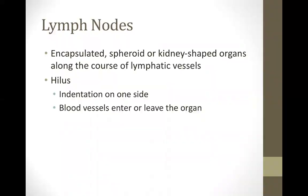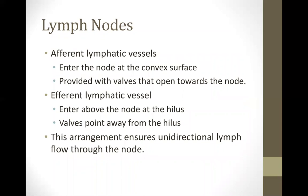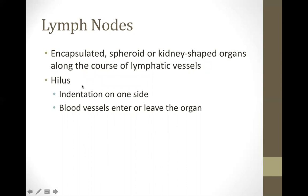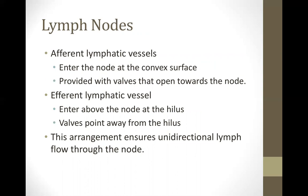The next lymphatic organ is lymph nodes — in Tagalog, kulani. They are described as encapsulated, spheroid or kidney-shaped organs along the course of lymphatic vessels. The lymph node has an indentation on one side called the hilus, where blood vessels enter or leave. There are afferent and efferent lymphatic vessels: afferent vessels enter at the convex surface with valves that open toward the node, while efferent lymphatic vessels enter above the node at the hilus with valves pointing away.